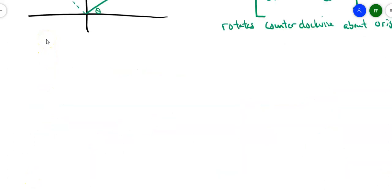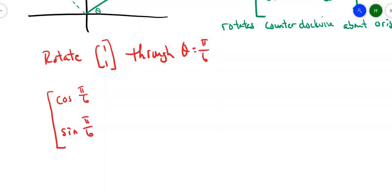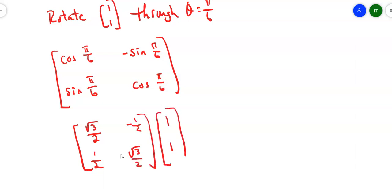Let's take a look at a quick example. Suppose I want to rotate the vector 1, 1 through an angle of theta equals pi over 6. So what does my transformation matrix look like? It looks like this: cosine of pi over 6, negative sine of pi over 6 in the first row, and sine of pi over 6, cosine of pi over 6 in the second row. Let's turn those into numbers and multiply by 1, 1.